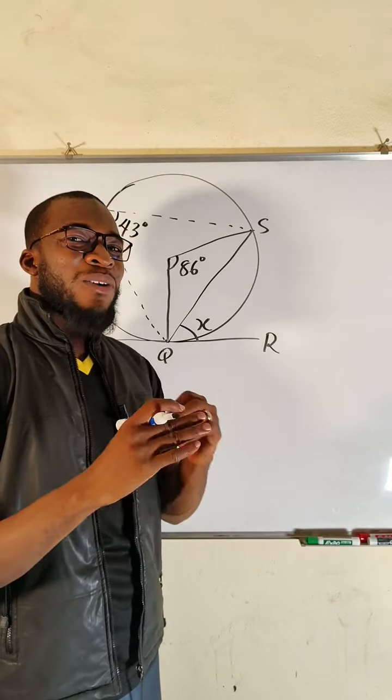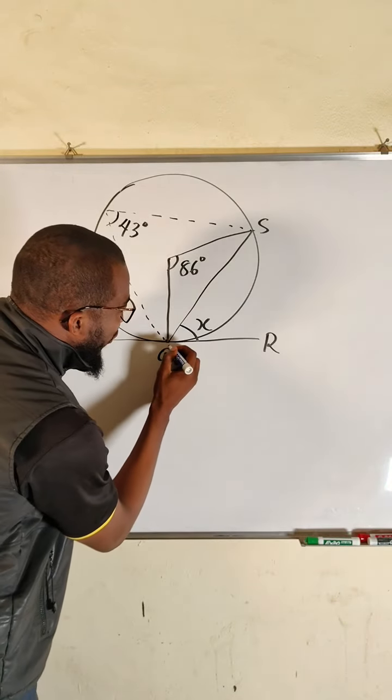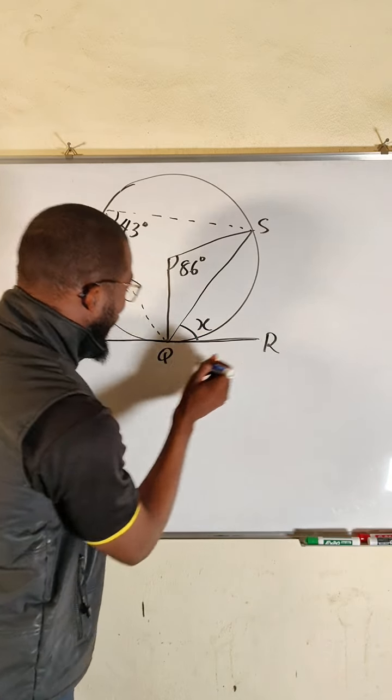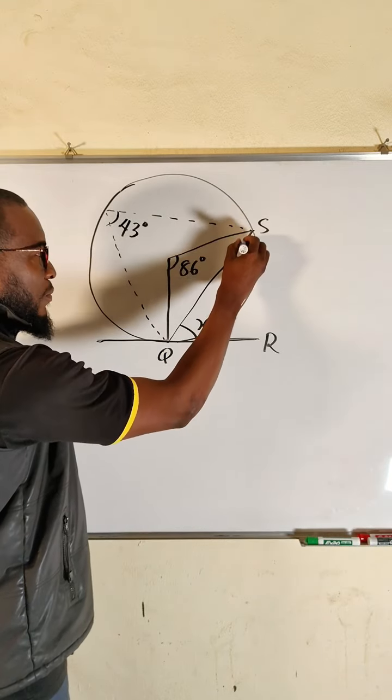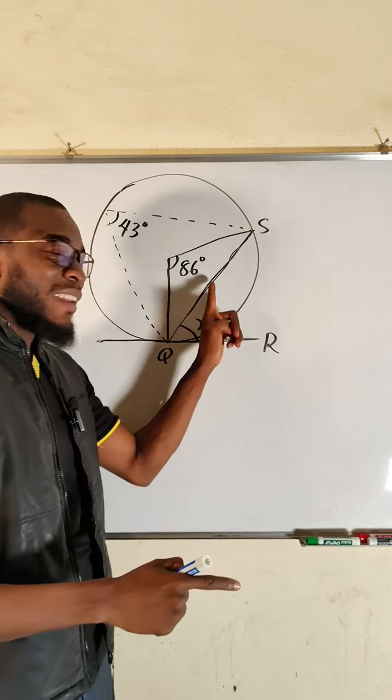And what can you remember about alternate segment theorem? It states that the angle formed between the tangent—this is a tangent—and the chord, which is x, is exactly equal to that angle subtended by the same chord to the circumference.